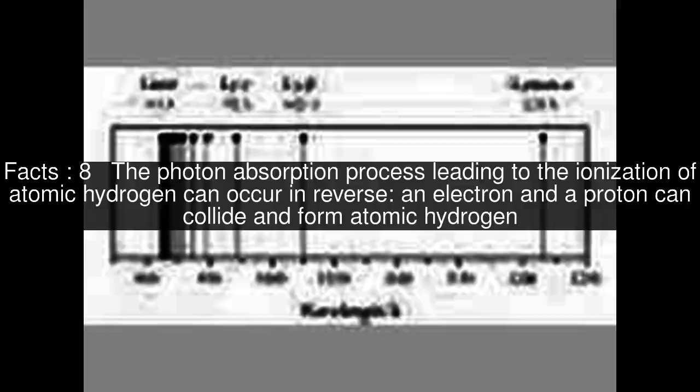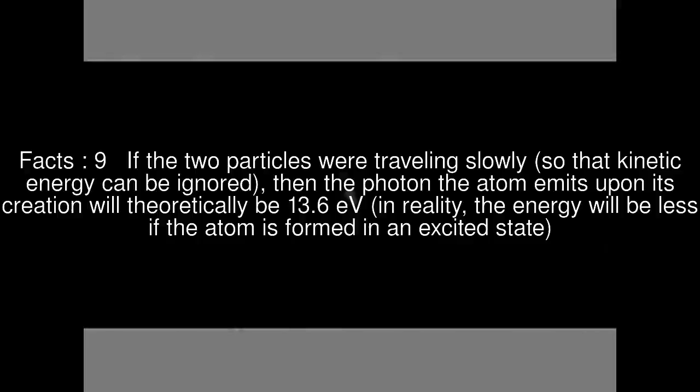The photon absorption process leading to the ionization of atomic hydrogen can occur in reverse. An electron and a proton can collide and form atomic hydrogen. If the two particles were traveling slowly, so that kinetic energy can be ignored,